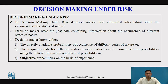Now let us see what is decision-making under risk. A decision-making under risk is where the decision-maker has additional information about the occurrence of the state of nature. He has collected past data or has information related to the particular course of actions for the respective states of nature. The decision-maker knows either the direct available probability of occurrence of the different states of nature or the frequency data for the different states of nature, which helps us convert the frequency data into probability and use it for the particular criteria for decision-making.